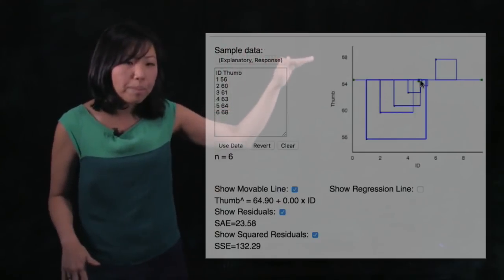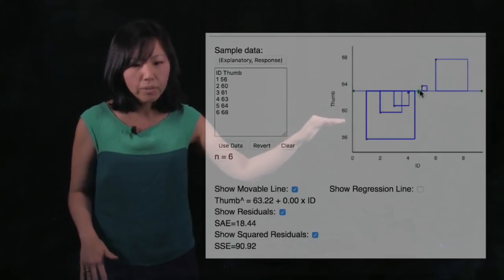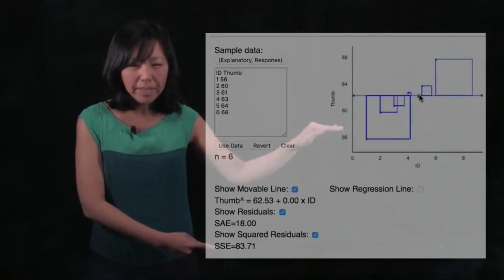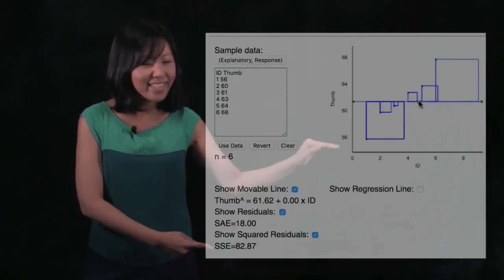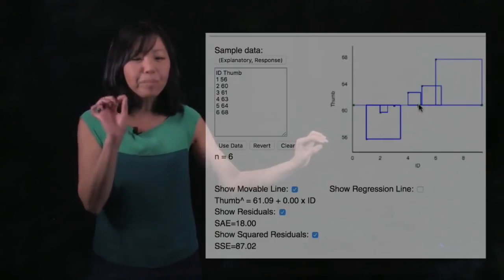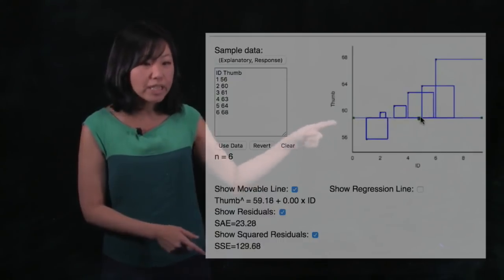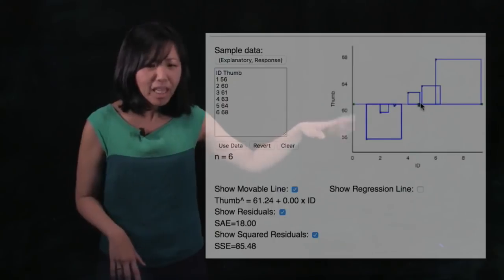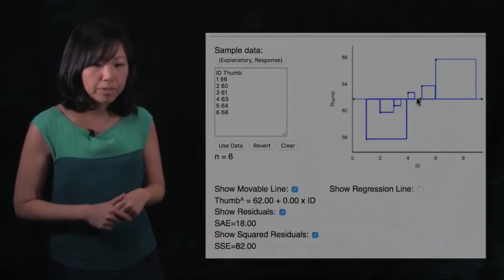Now what if we move down past the mean? So here we're still above the mean. Remember 62 was our mean. So watch that sum of squares. We're coming down. We're coming down. We're coming down. There's our mean, 82. And if we go even just a little past, a little past the mean, we see that our sum of squares starts to go up right away. And you could see that visually also with the squares, getting bigger. So now let's return to the mean. So here's our mean, which minimizes the sum of squares.